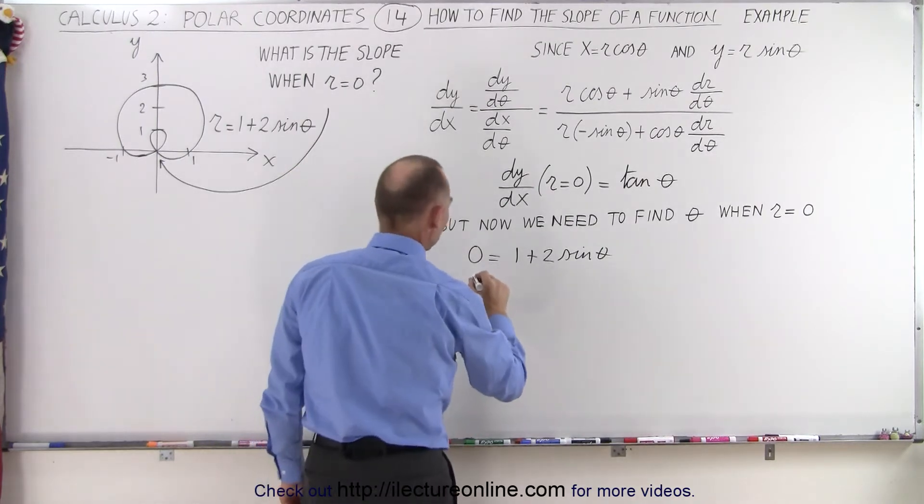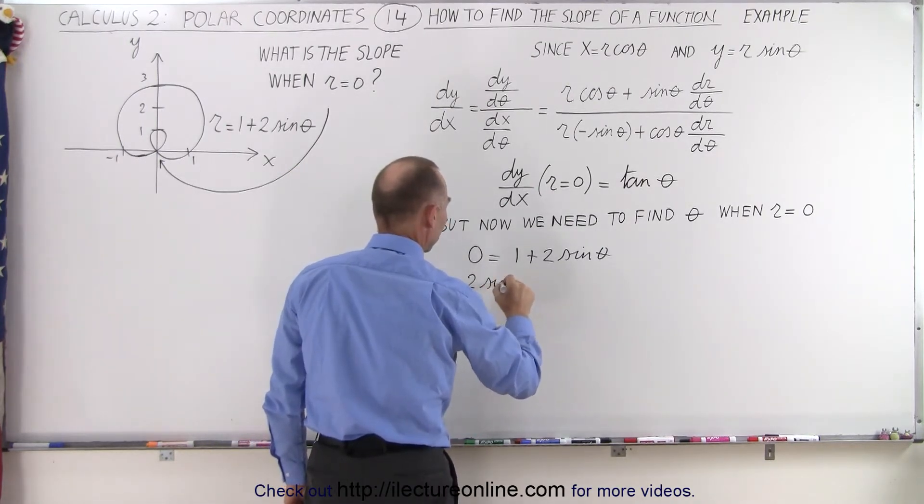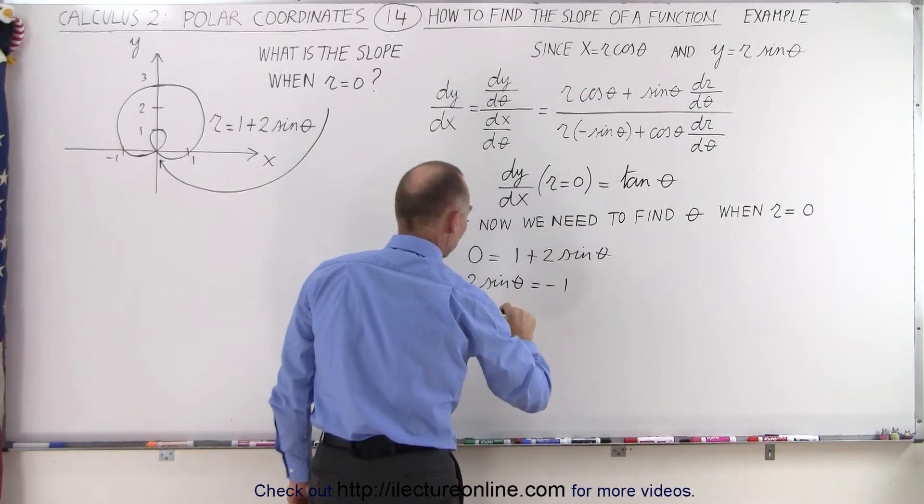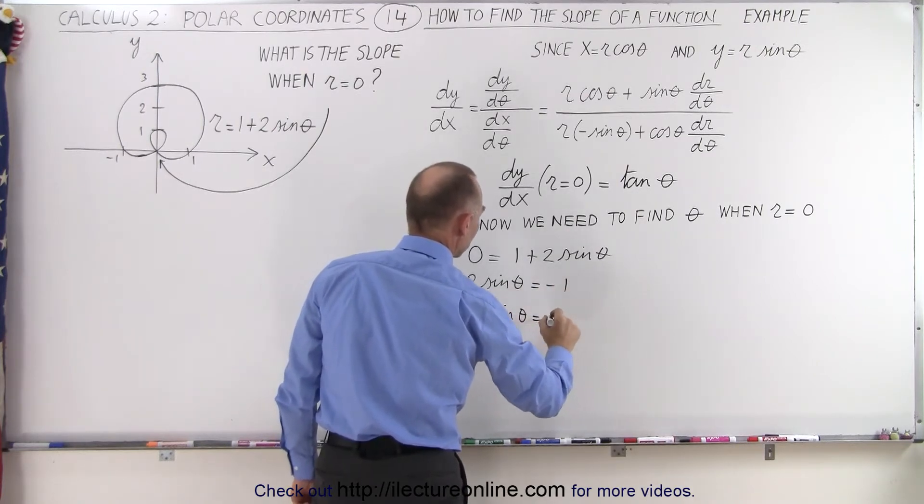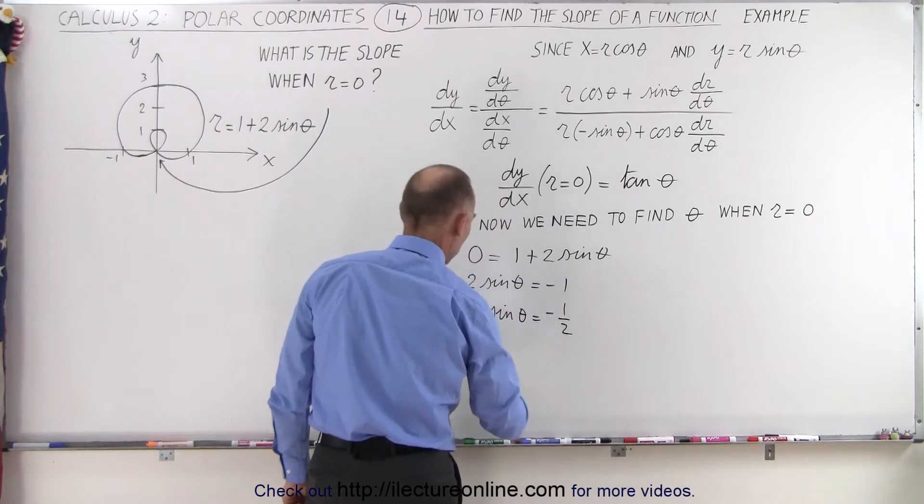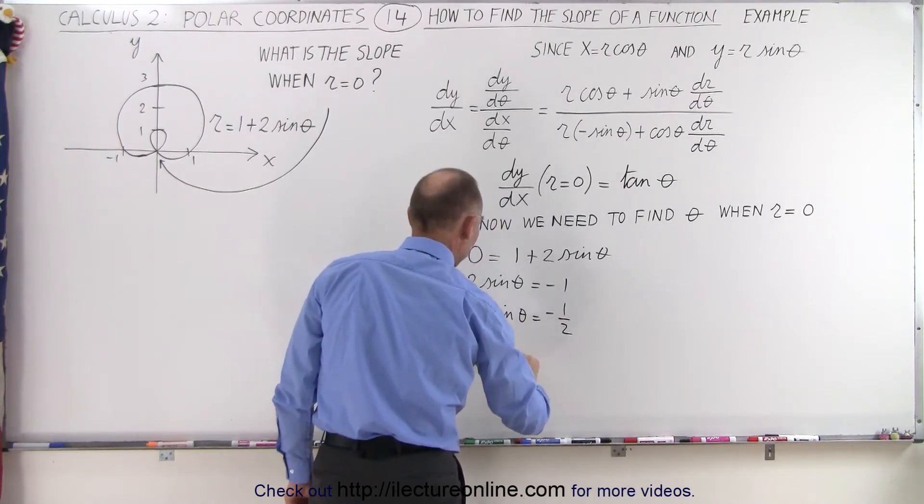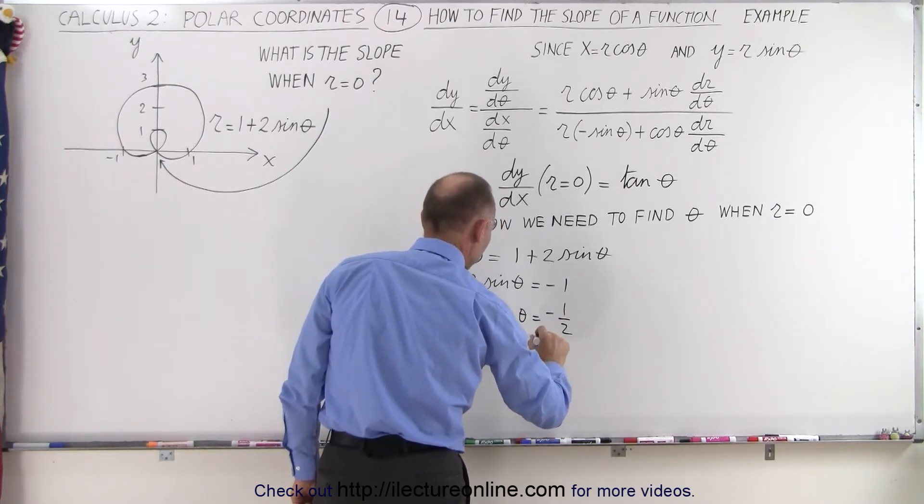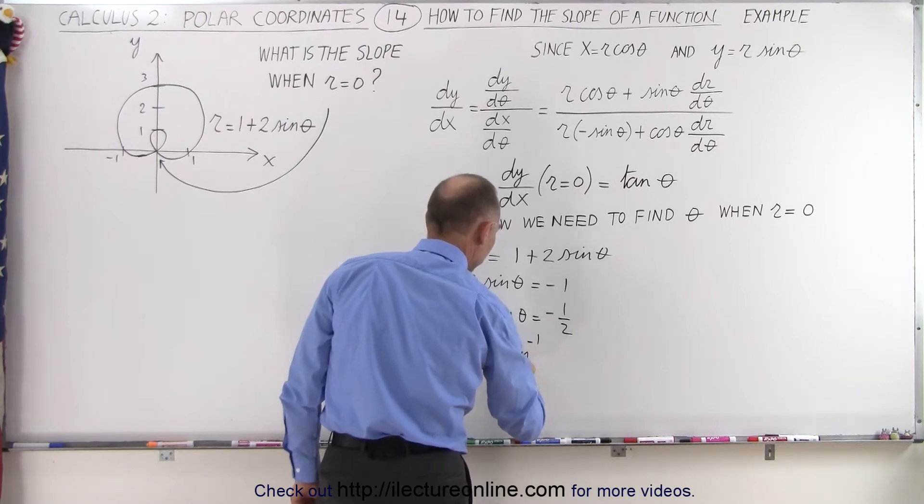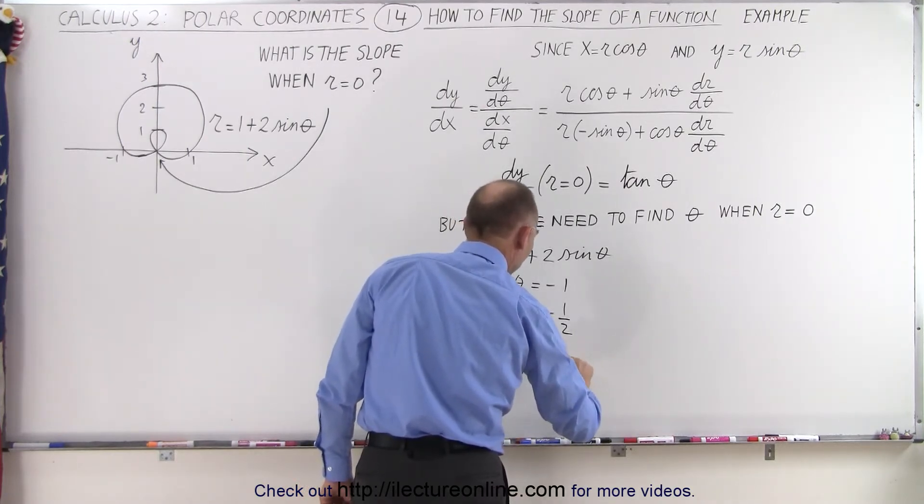So that means we can write this as 2 times the sine of theta is equal to negative 1, or the sine of theta is equal to negative 1 over 2, which means that theta is equal to the inverse sine of minus 1 half.